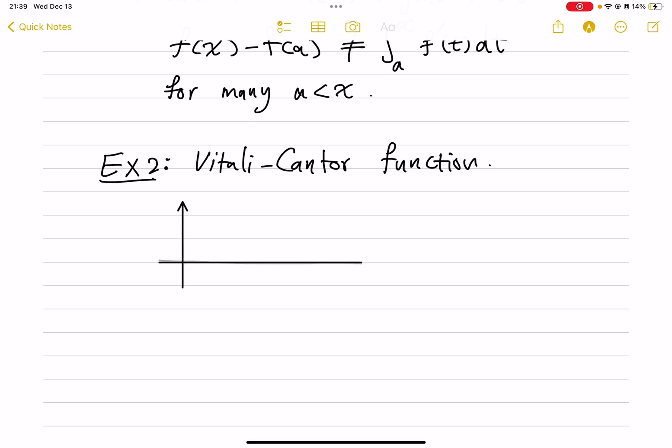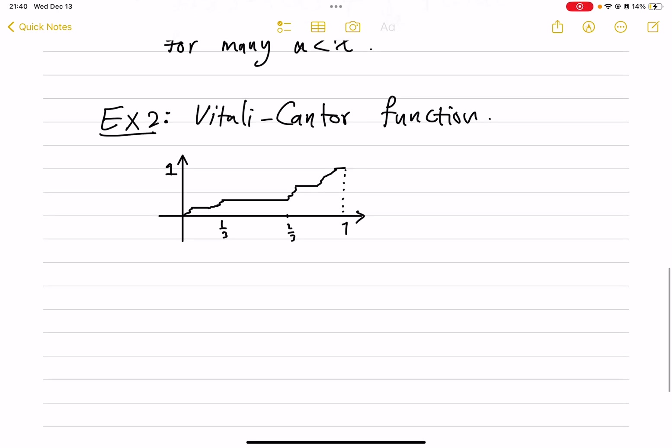The core idea is that this is constant on the complement of the Cantor set. So from one-third to two-thirds is just constant. Every time in the process of constructing the Cantor set when we remove an open interval, on those intervals this function will be constant. But then, magically somehow, it manages to be increasing and connecting. At one, it obtains the value of one. So this is an increasing function.